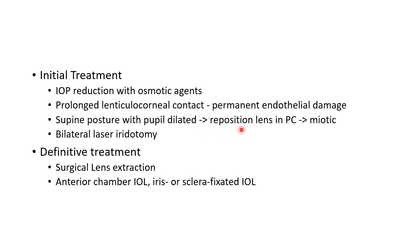Initial treatment consists of supine posture with the pupil dilated, which may reposition the lens into the posterior chamber, following which a miotic can be applied. Bilateral laser iridotomy can also be done as initial treatment. The definitive treatment, however, is surgical lens extraction. After lens extraction, we can place an anterior chamber intraocular lens, or iris- or sclera-fixated intraocular lens.